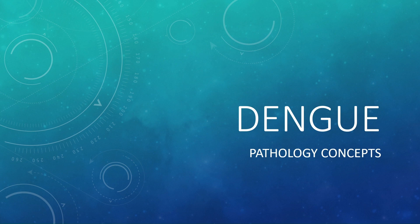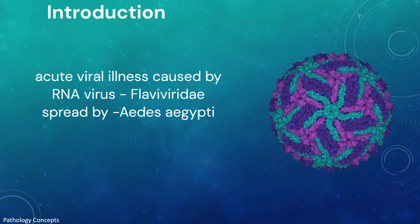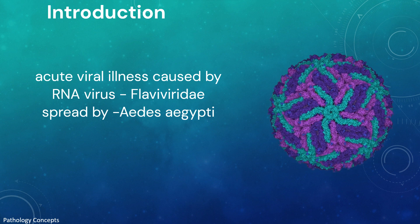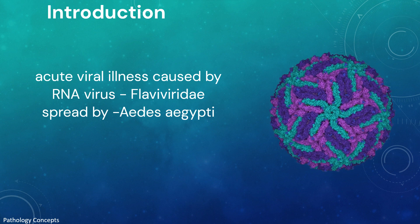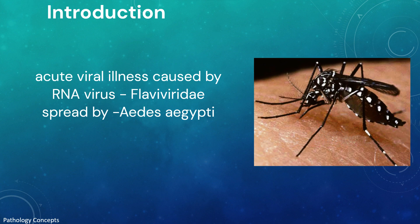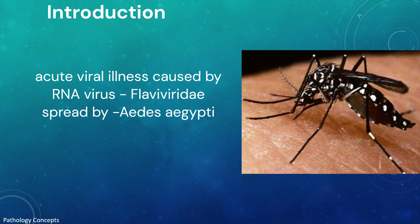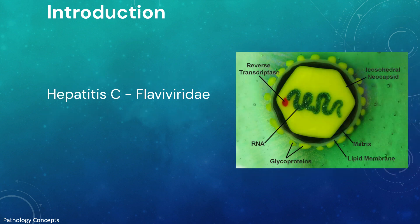Hello and welcome everyone. Today we are discussing dengue. Dengue is an acute viral illness caused by an RNA virus of the family Flaviviridae, spread by Aedes aegypti mosquitoes. We have learned earlier that hepatitis C virus is also from the Flaviviridae family.